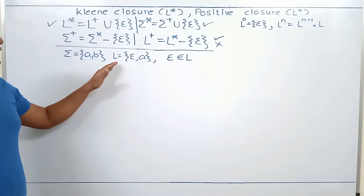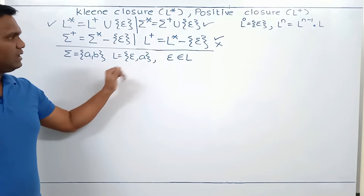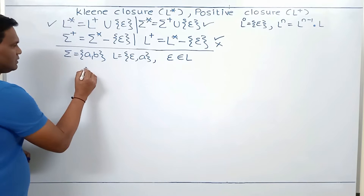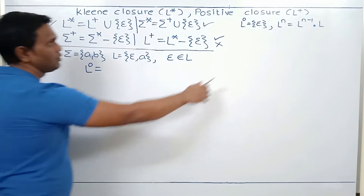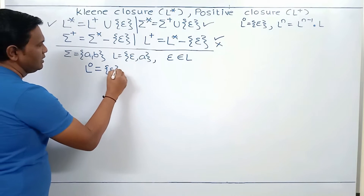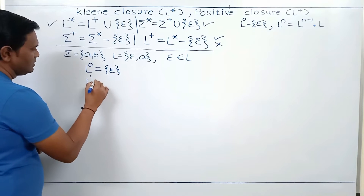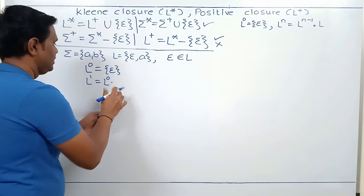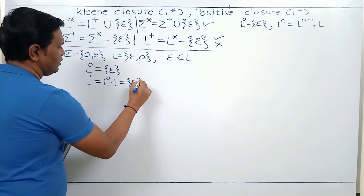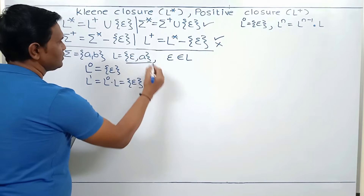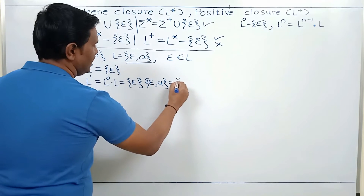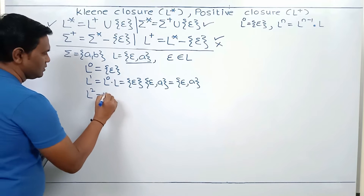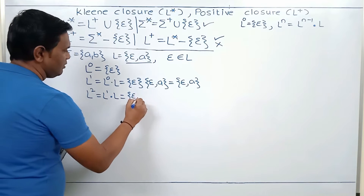Consider this example: a language that contains two strings, epsilon and A. The particular thing about this language is epsilon belongs to L. Now if we calculate L^0, then according to the formula, L^0 contains only epsilon. For L^1, it is L^0 dot L. L^0 is epsilon, and L is {epsilon, a}, so we get {epsilon, a} as L^1.